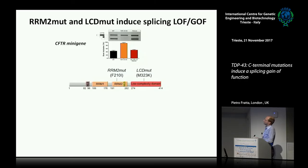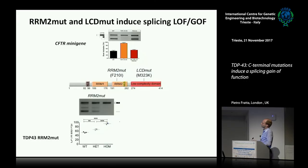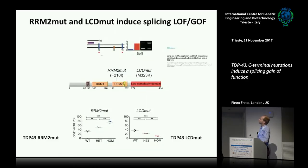We used a classical minigene assay applied to TDP-43 — the CFTR minigene. Normally in cells it's spliced 50%; if you knock down TDP-43, you just get the high band. In our two mutant mice, the RRM2 homozygote gives a very similar picture to the knockout. But unexpectedly, the LCD mutant gives the opposite — splicing changes go in the opposite direction. We checked another classical TDP-43 target, Sortilin 1, identified by Don Cleveland in 2011. Again, in the knockdown and in the RRM2 mutant it goes up, but in the LCD mutation it goes down — indicating a gain-of-function splicing effect.